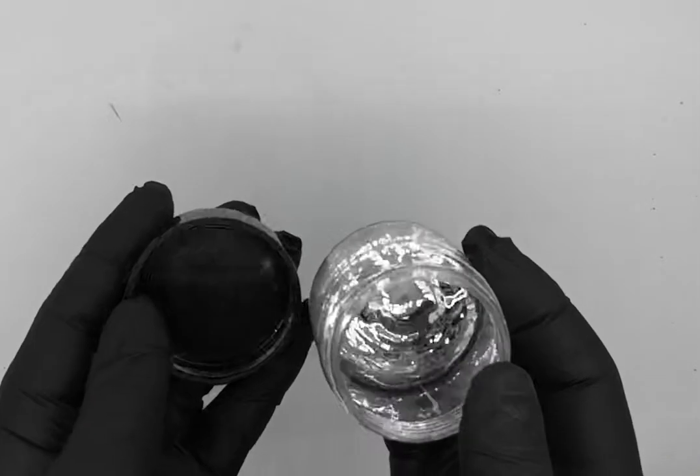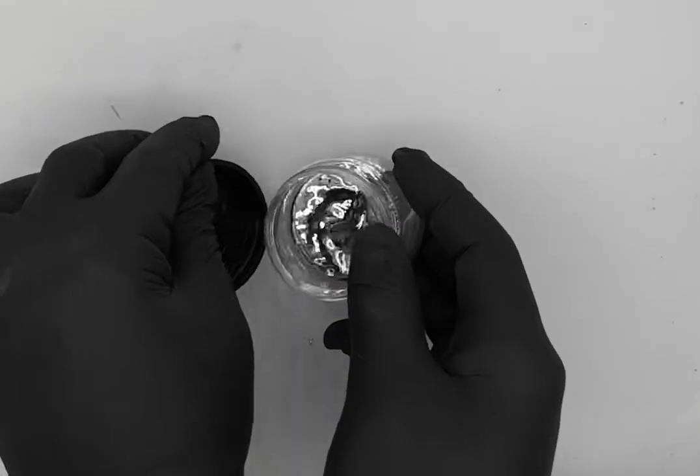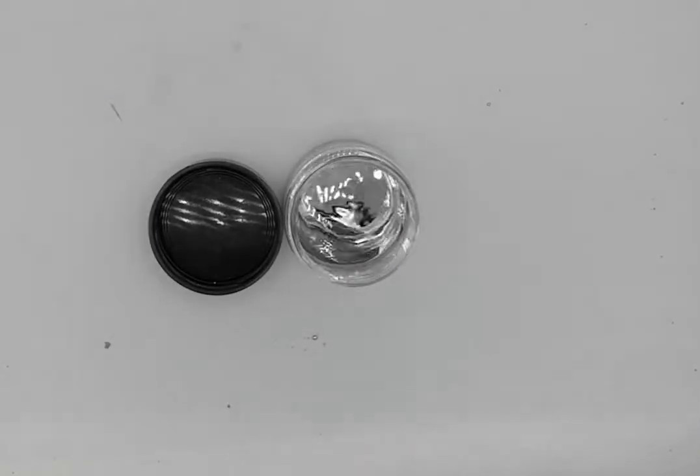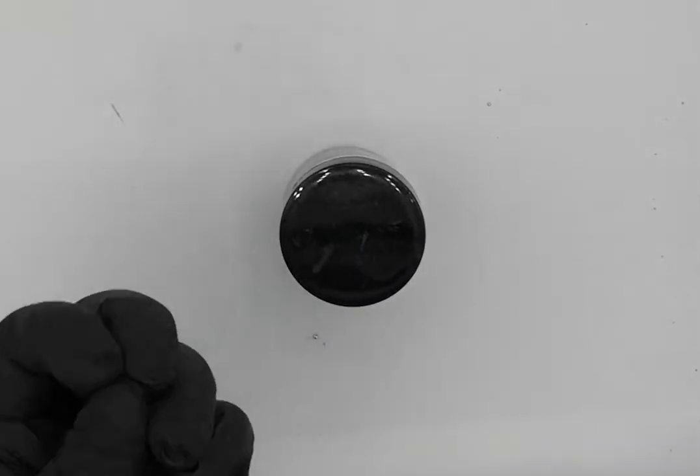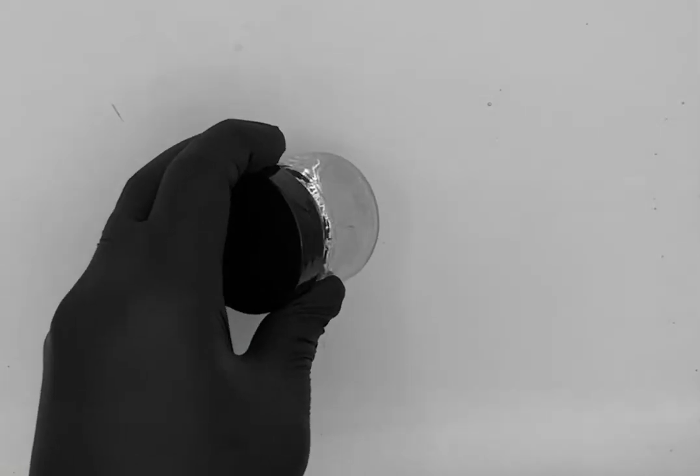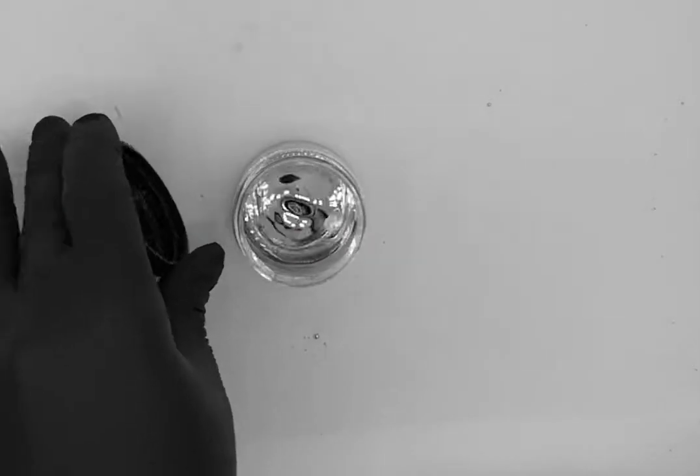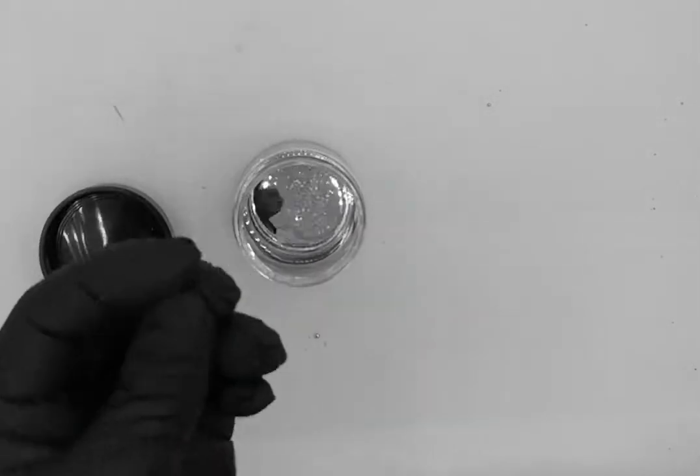When you heat mercury, or even if you leave it like this and you leave it there long enough and you were to close this, the mercury inside will start evaporating a little bit.